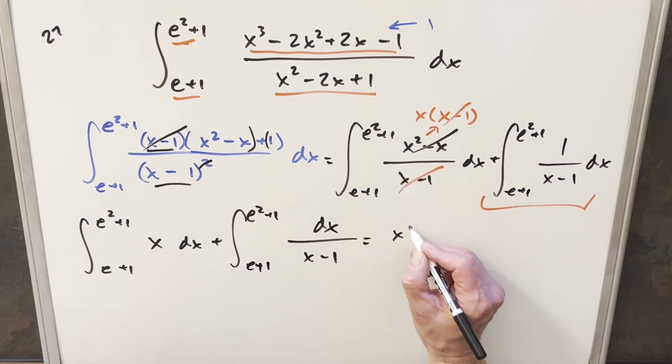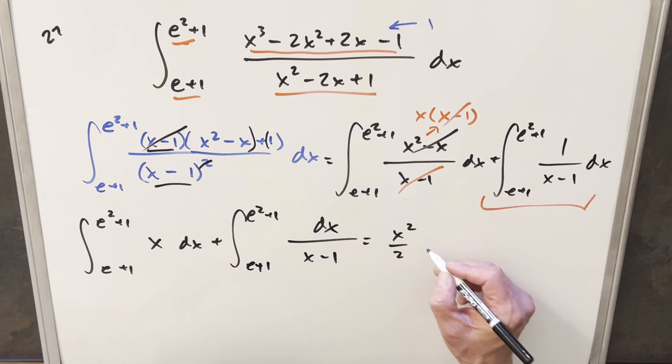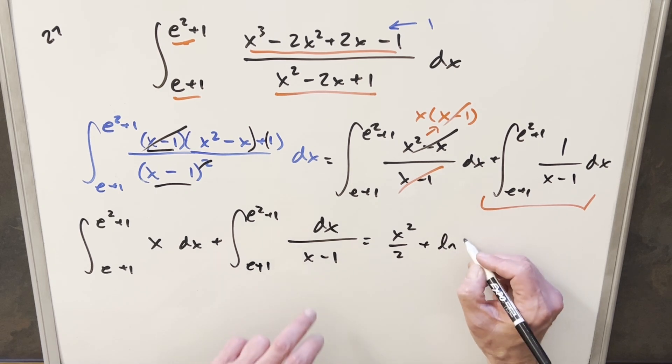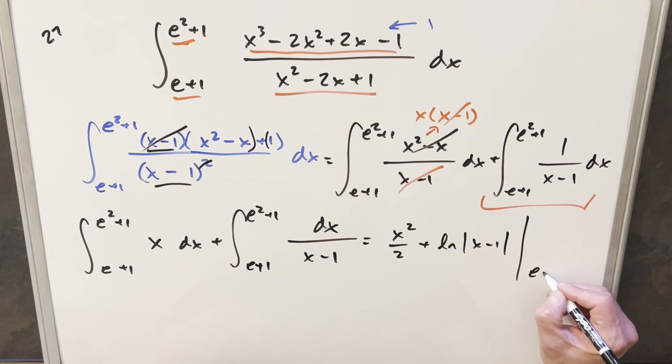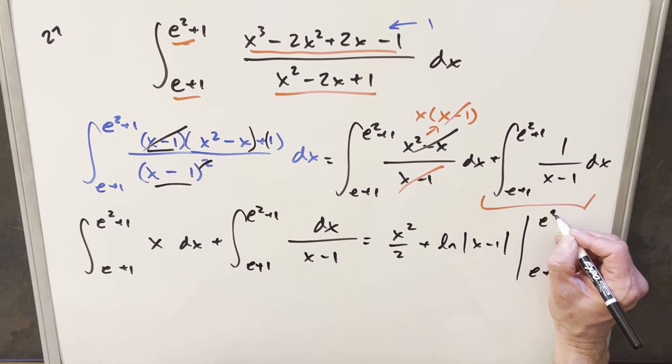So power rule here, we're going to get x squared over 2. Integrating here, we're going to get plus natural log absolute value x minus 1. And we can just evaluate all this from e plus 1 to e squared plus 1.